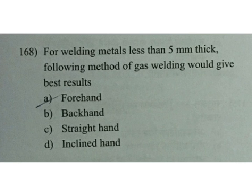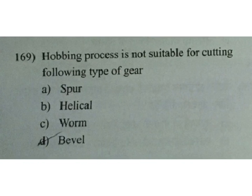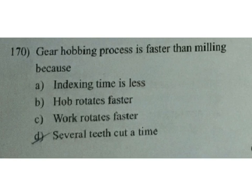Hobbing process is not suitable for cutting the following type of gear: A spur gear, B helical gear, C worm gear, D bevel gear. Bevel gear is the answer. Gear hobbing process is faster than milling because: A indexing time is less, B hob rotates faster, C work rotates faster, D several teeth are cut at a time. D is the answer — at the same time several teeth will be cut.